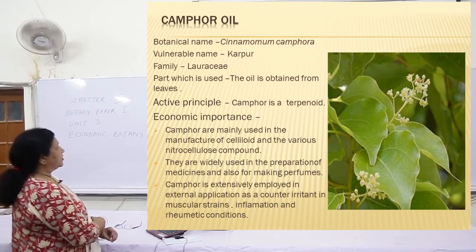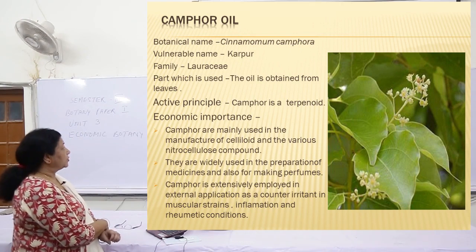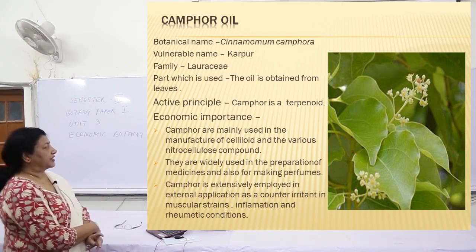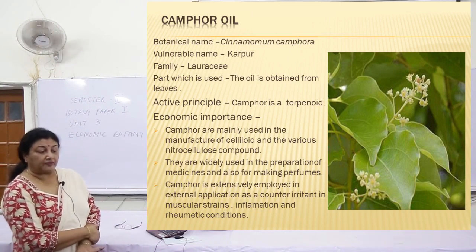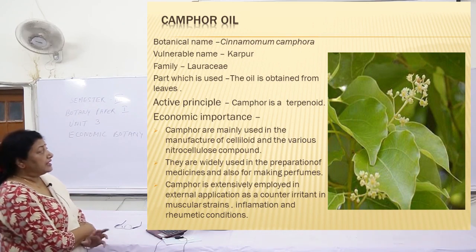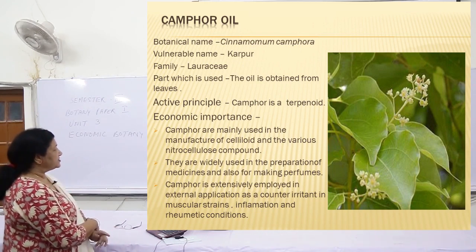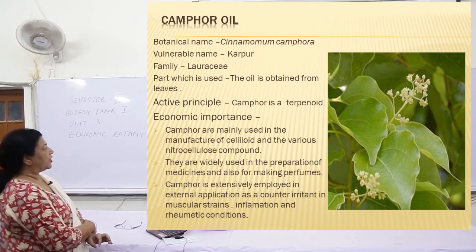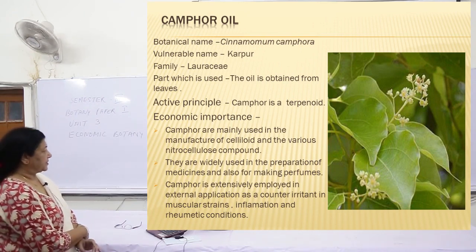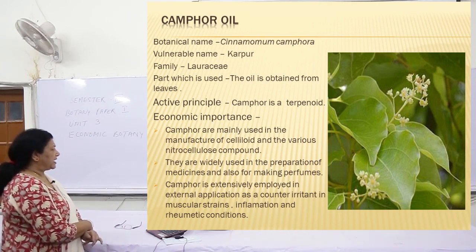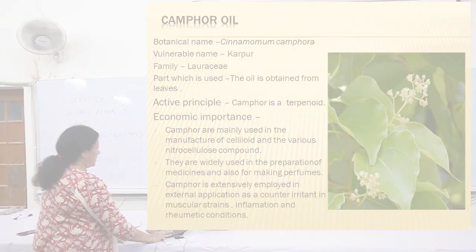Starting with camphor oil. Botanical name: Cinnamomum camphora. Vernacular name: kapoor. Family: Lauraceae. The oil is obtained from the leaves. It is mainly used in the manufacture of celluloid and various nitrocellulose compounds, and in preparation of medicines and perfumes. Camphor is extensively employed in external applications as a counter-irritant in muscular strain, inflammation and rheumatic conditions.